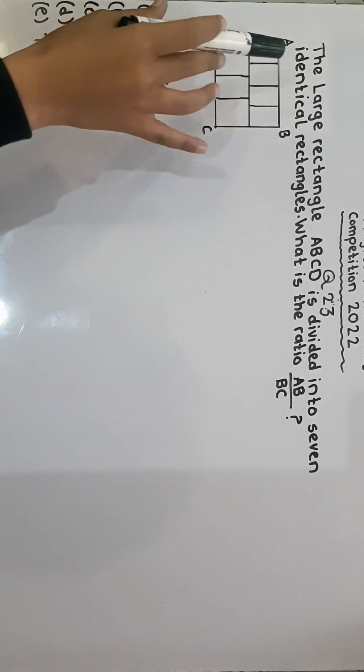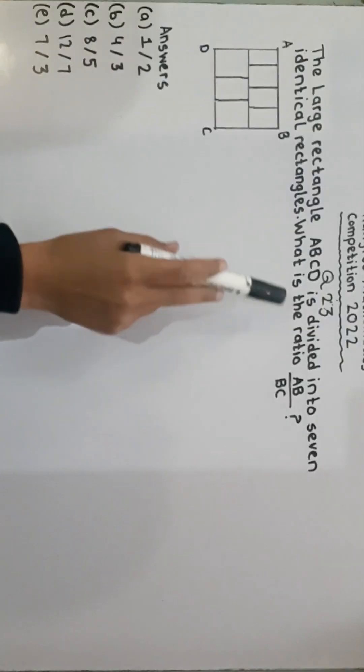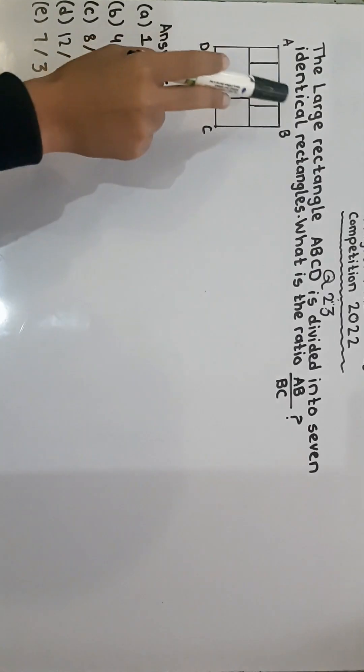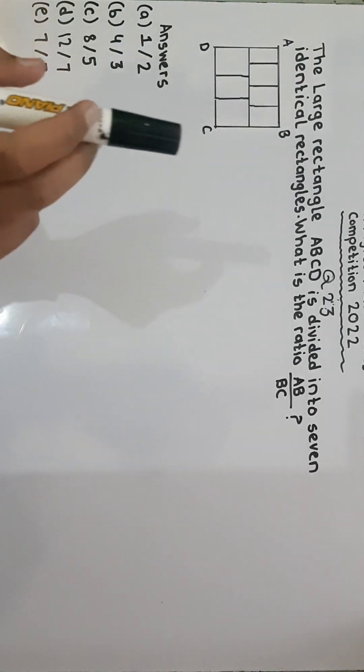The question is the large rectangle ABCD. They are talking about this rectangle. It's divided into 7 identical rectangles.